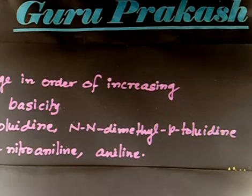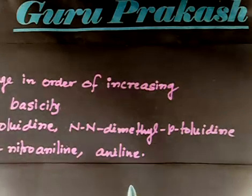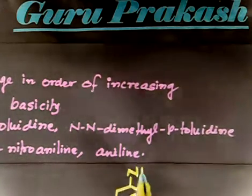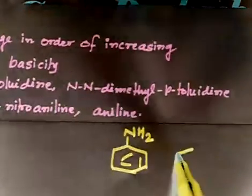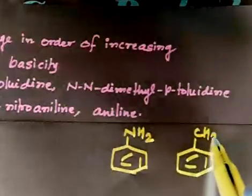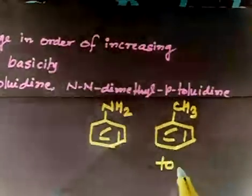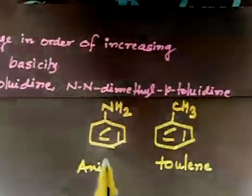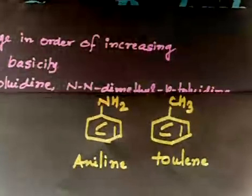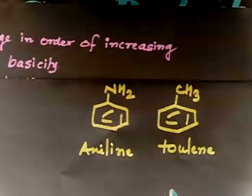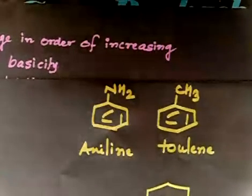One important point: you must know what is para-toluidine. I will give you a hint. This molecule is called aniline with NH2, and this molecule is called toluene. So this is toluene if you remember, and this is aniline.